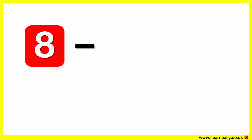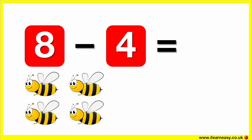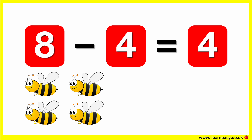Eight minus four equals. Here are eight bees. Let's take away four bees. Now there are four bees. So, eight minus four equals four.